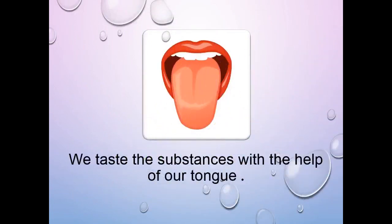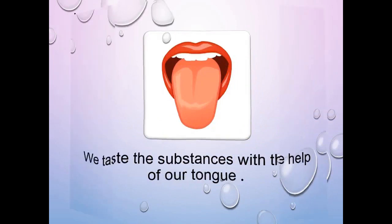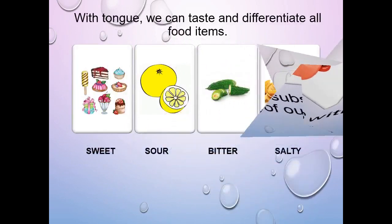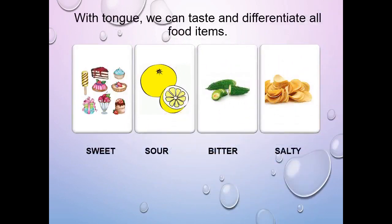Our fourth sense is the sense of taste. We taste substances with the help of our tongue. With our tongue we can taste and differentiate all food items. Like ice cream is sweet, lemon is sour, bitter gourd is bitter, and chips are salty.